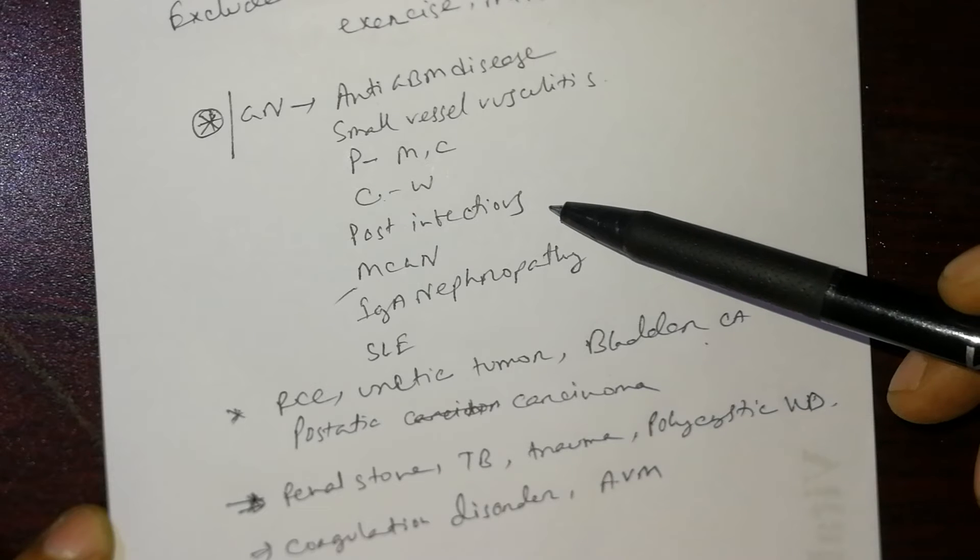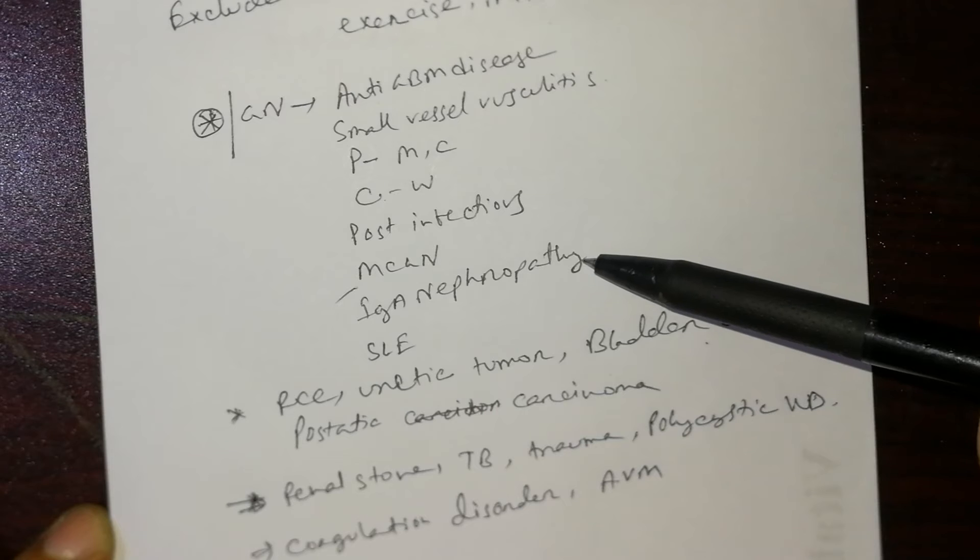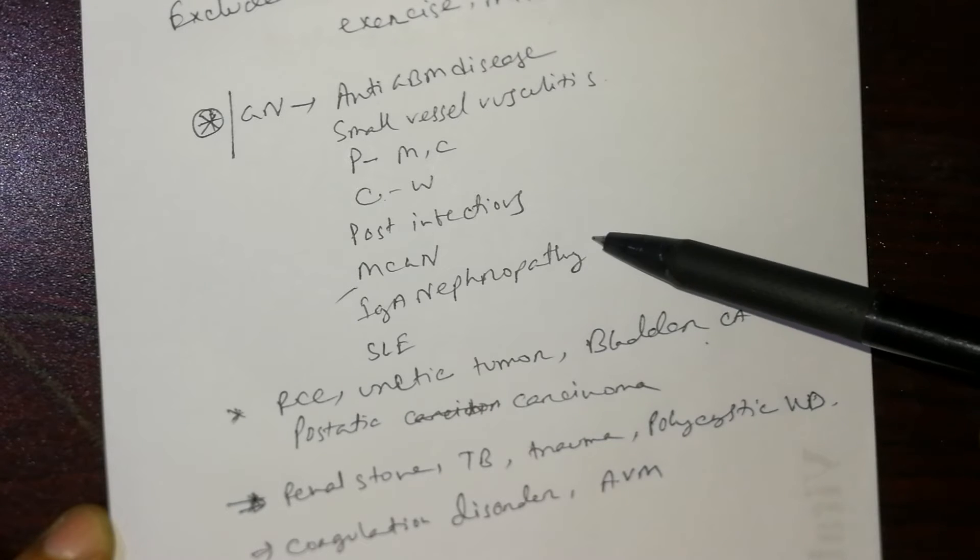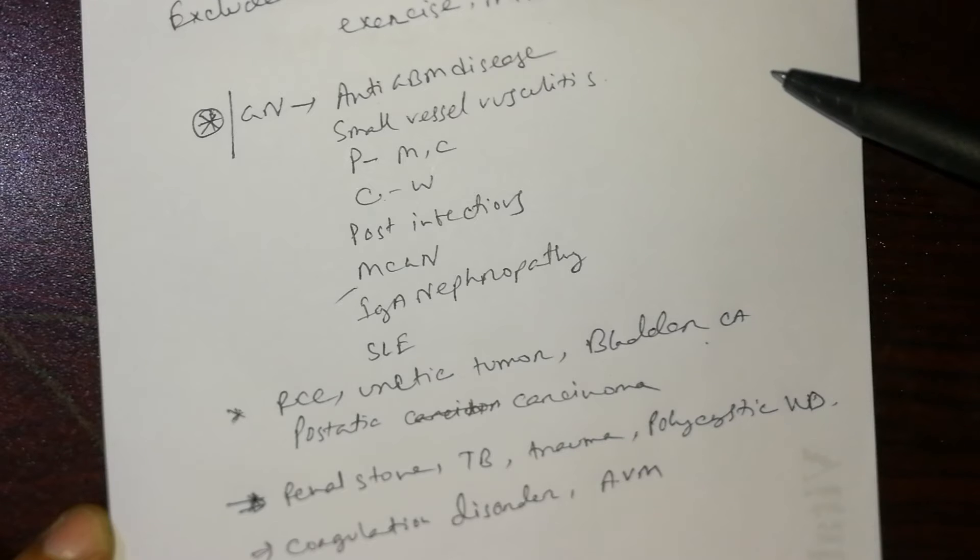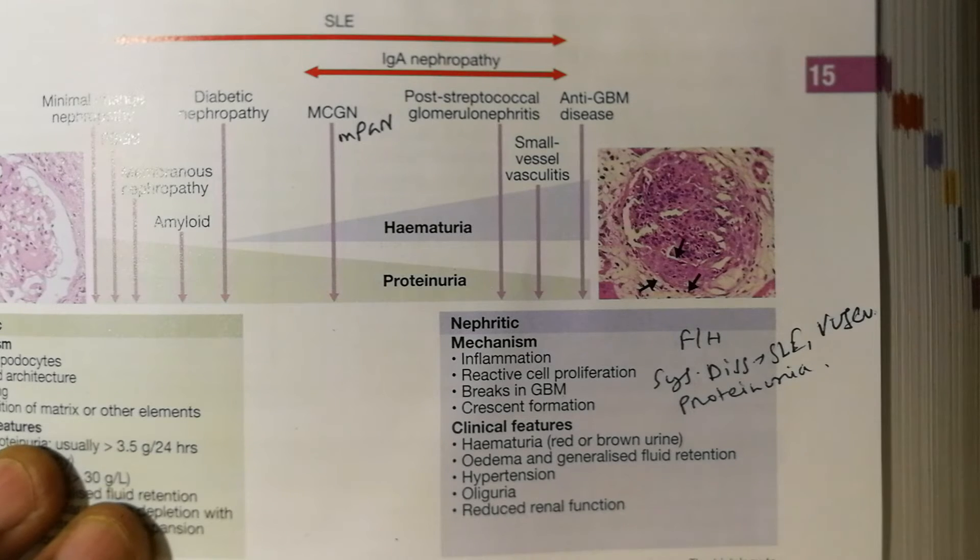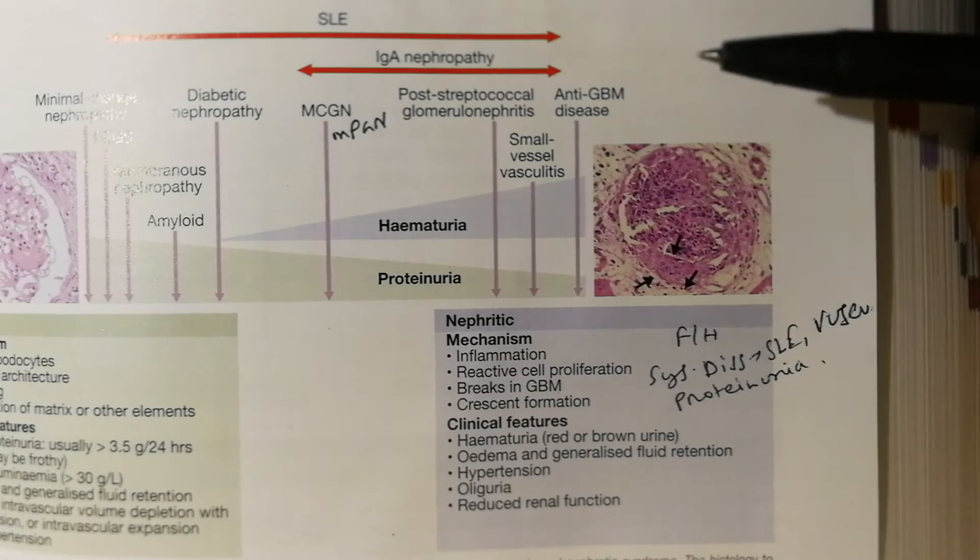Mesangiocapillary glomerulonephritis, IgA nephropathy that silently damages the kidney, and SLE. These are the causes of glomerular syndrome taken from Davidson Principles of Medicine.